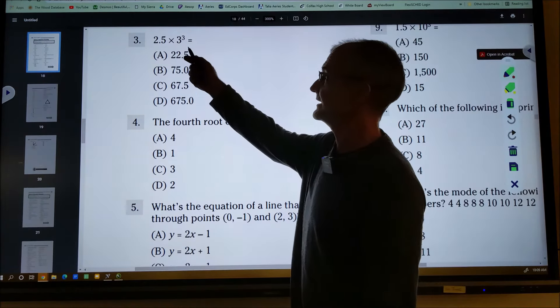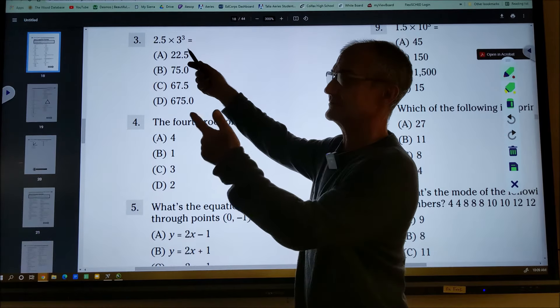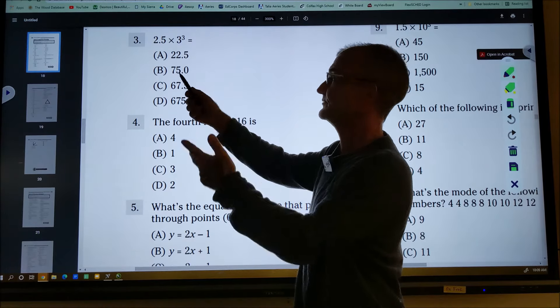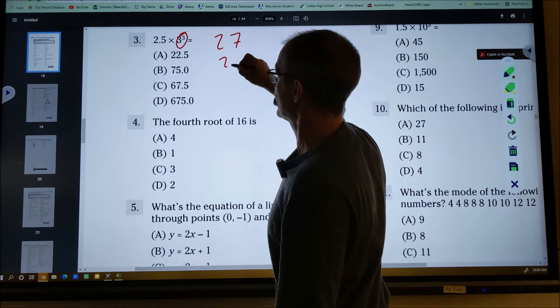On to number three. Again, order of operations. Three cubed is three times three, nine times three, 27. So this thing right here is 27 times 2.5.